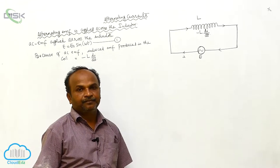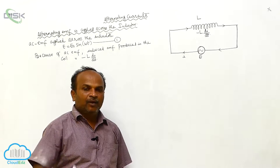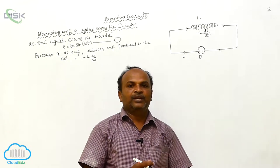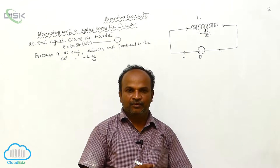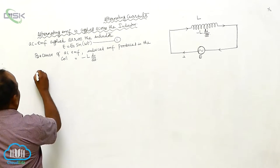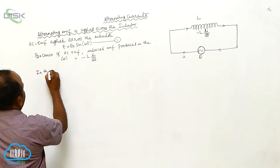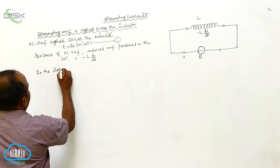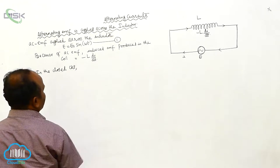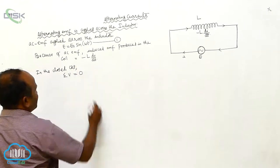According to Kirchhoff's law, the algebraic sum of potential differences in a closed circuit equals zero.